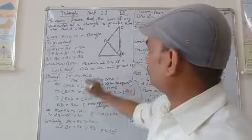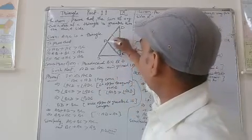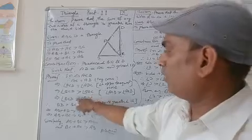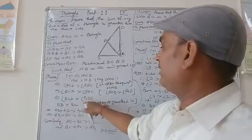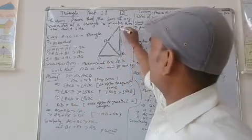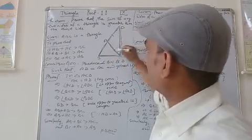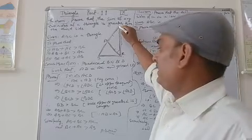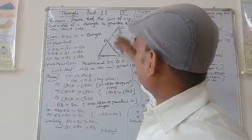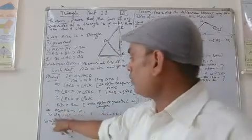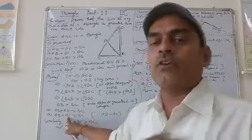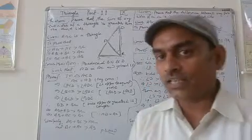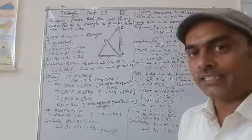If we consider angle BCD, angle BCD is greater than angle ADC, and BCD is greater than BDC. Therefore ADC is greater than BDC. So BCD is greater than BDC, which leads to AB being greater than BC in triangle ABD.